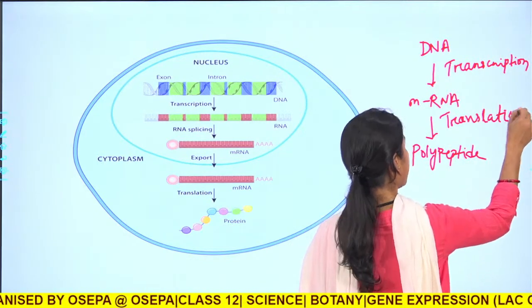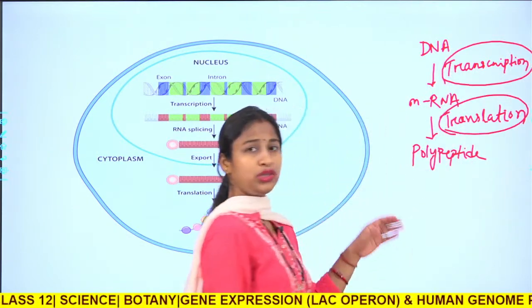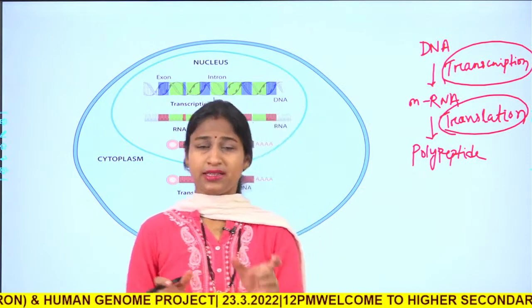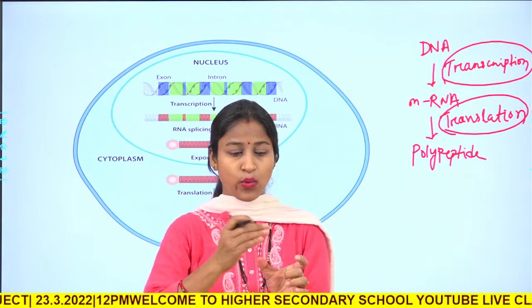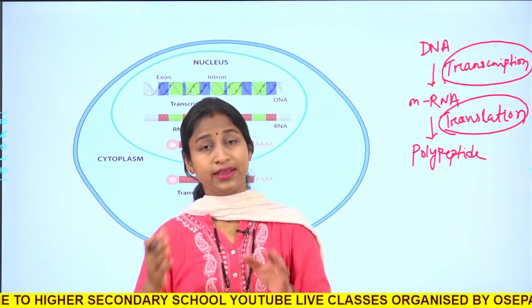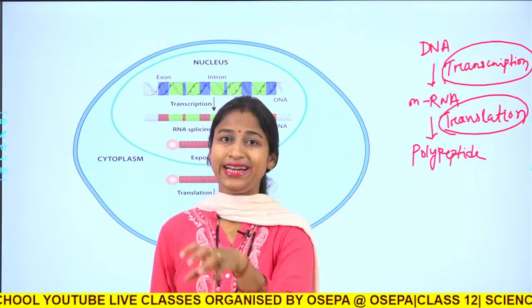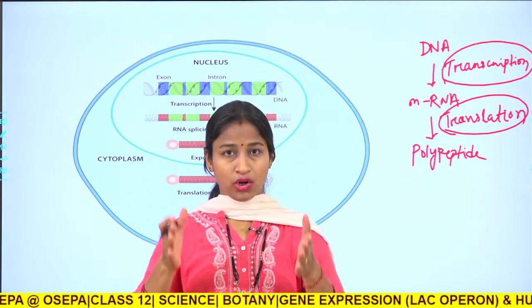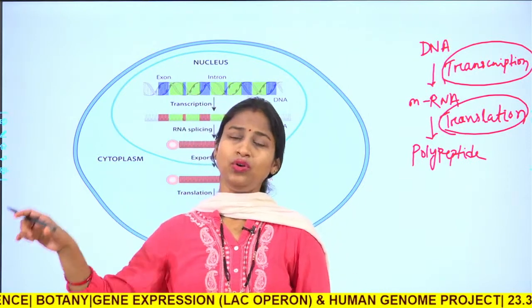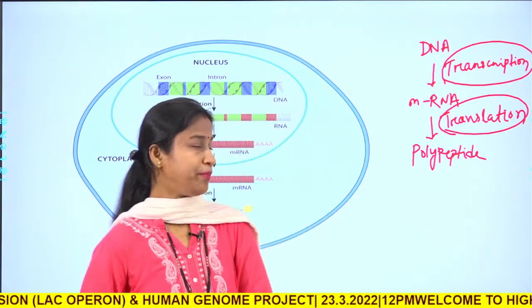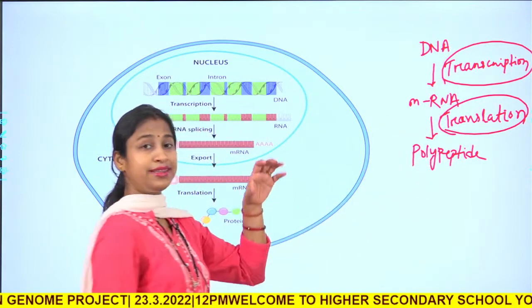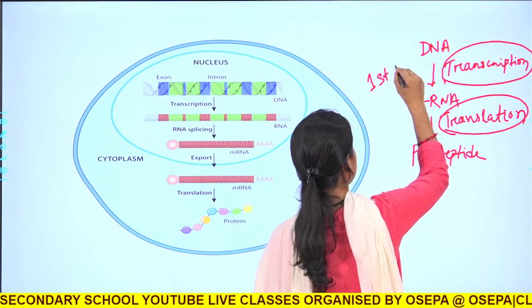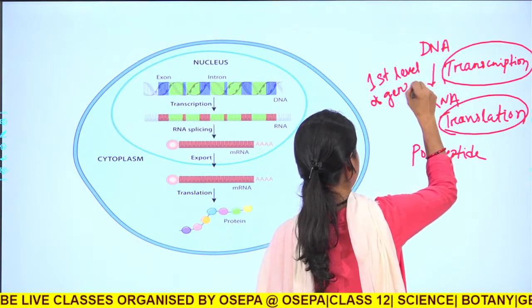Both transcription and translation are what we call gene expression. A gene is a segment of DNA. When that segment is converted into a form of RNA and then into a form of protein, this is called gene expression. The segment of DNA is expressed in different forms like non-coding RNA or coding RNA, and finally to a functional or structural polypeptide. So transcription is the first level of gene expression.